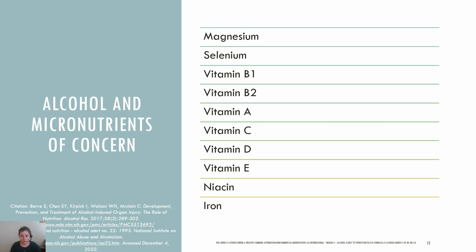Vitamin B1 or thiamine deficiency can lead to Wernicke-Korsakoff syndrome and neurological symptoms and damage. Vitamin B2 or riboflavin deficiency can lead to glossitis and colitis. Vitamin C deficiency can lead to scurvy with petechiae. Niacin deficiency can lead to confusion and skin photosensitivity. Mineral deficiencies in particular can be secondary to alcohol-related problems, like decreased calcium absorption due to fat malabsorption or iron deficiency relating to GI bleeding.